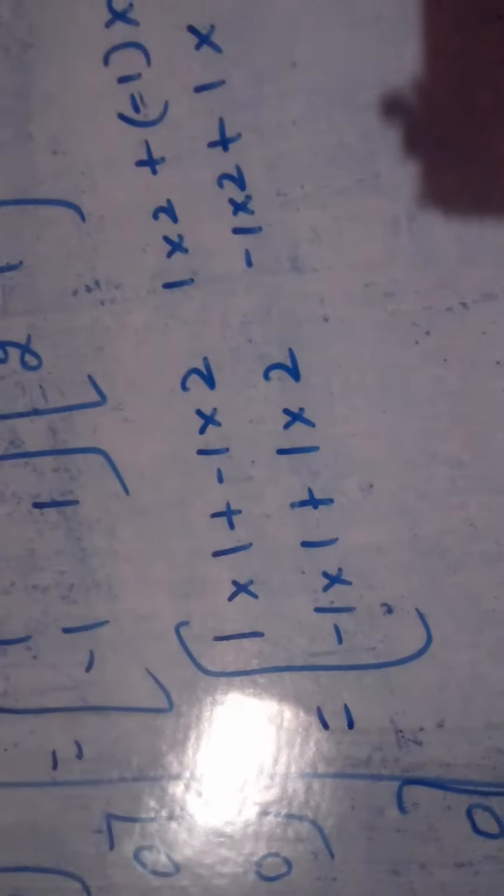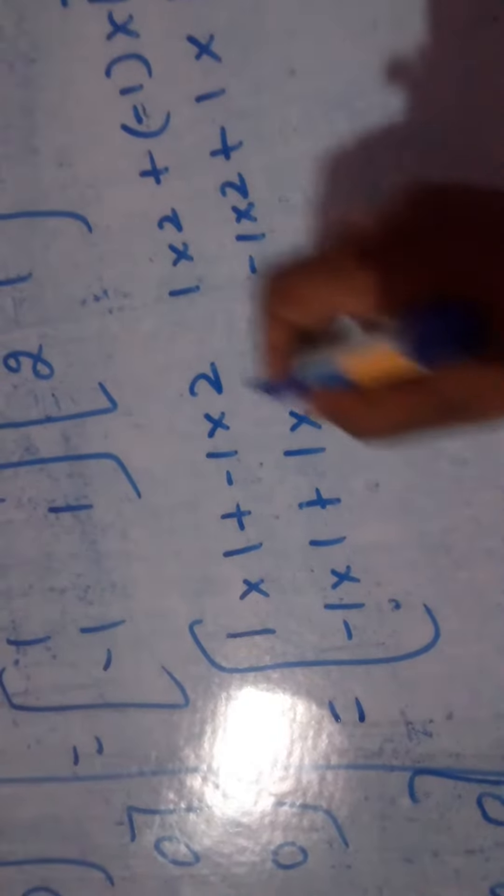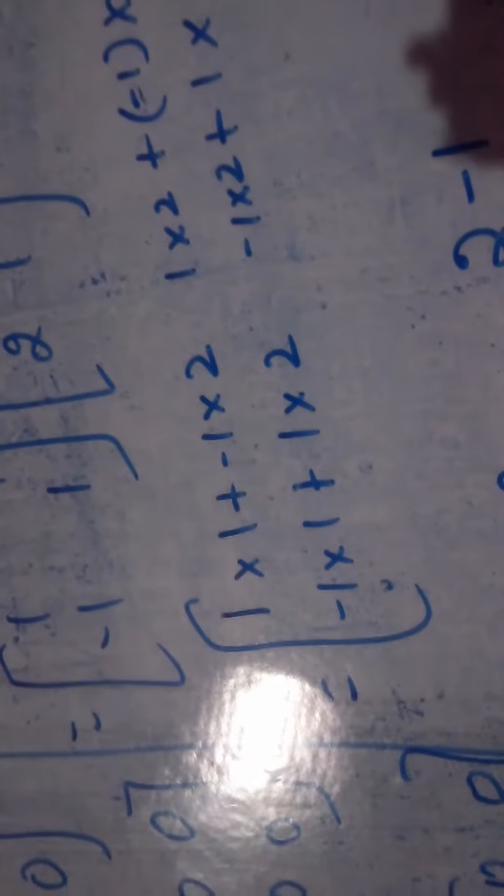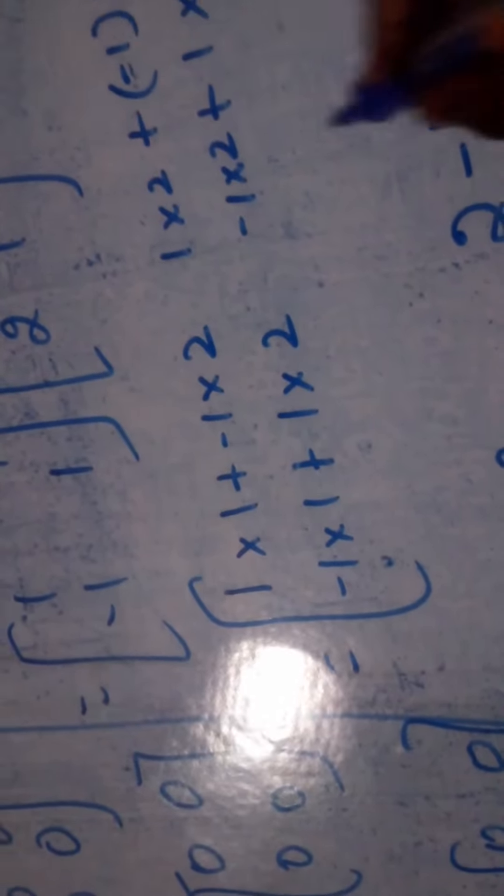Now here 1 into 1 is 1, 1 into 2 is minus 2. Here 1 into 2 is 2, plus into minus is minus 1. Here minus 1 plus 2, here it is minus 2 plus 1.